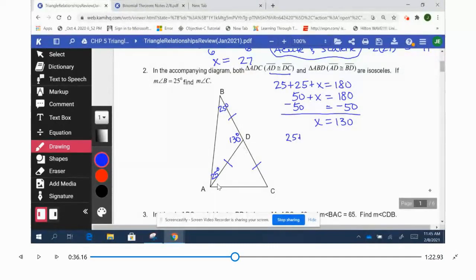I'll subtract from 180 to get 130, and then we'll split that equally for the other two base angles to get 65 each.